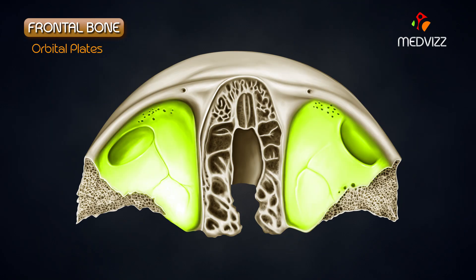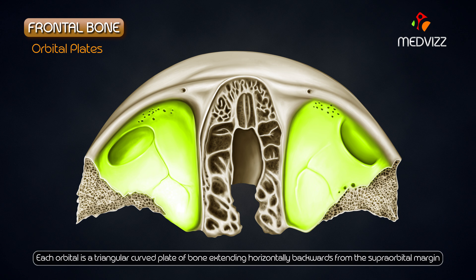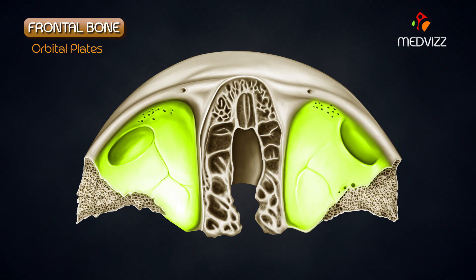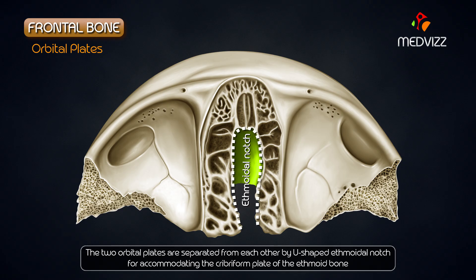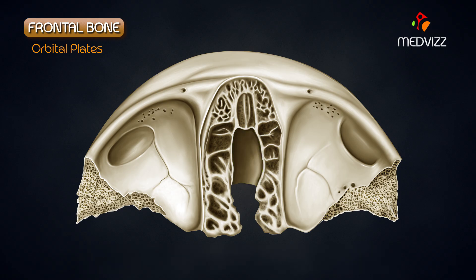Orbital plates. Each orbital plate is a triangular curved plate of bone extending horizontally backwards from the supraorbital margin. It forms most of the roof of the orbit. The two orbital plates are separated from each other by a U-shaped ethmoidal notch for accommodating the cribriform plate of the ethmoid bone. In front of the notch lie two openings which open into the right and left frontal air sinuses.